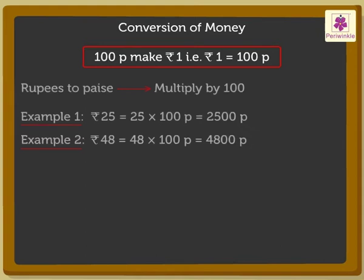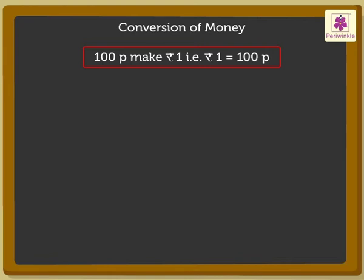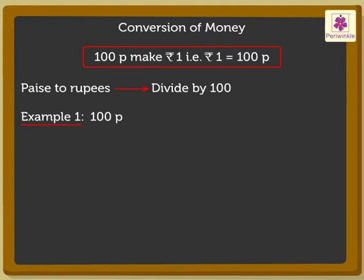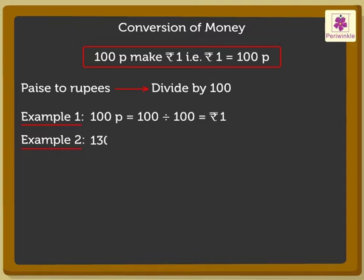Now, let's learn how to convert paise to rupees. To do this, we divide by 100. Let's see how: 100 paise is equal to 100 divided by 100, which is equal to rupee 1. Now let's try another example: 1,300 paise is equal to 1,300 divided by 100, which is equal to 13 rupees.